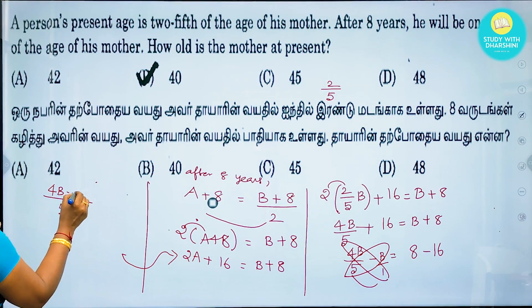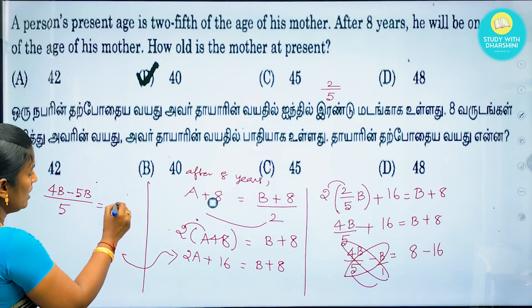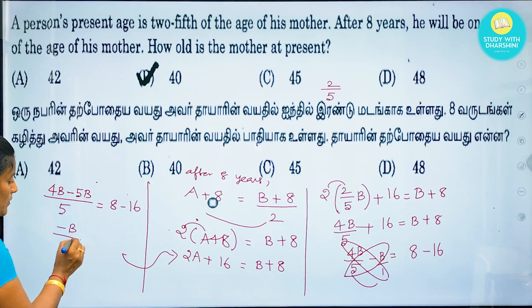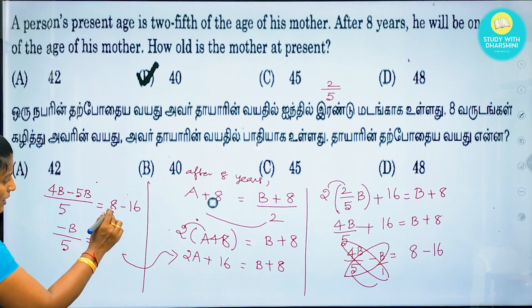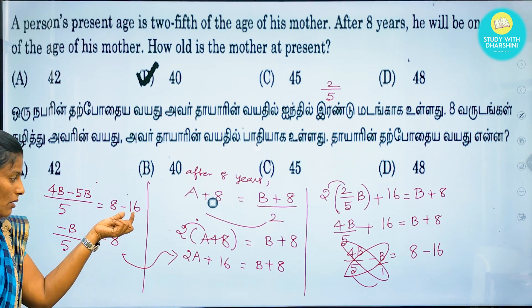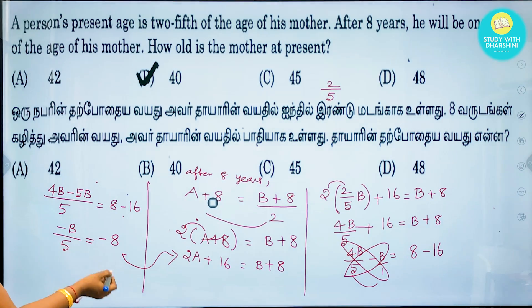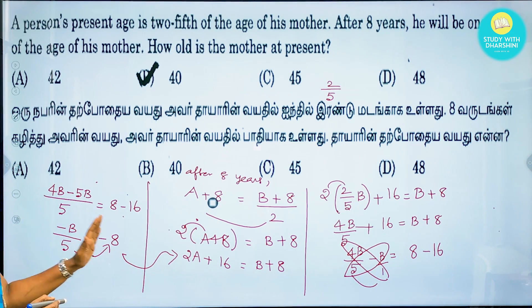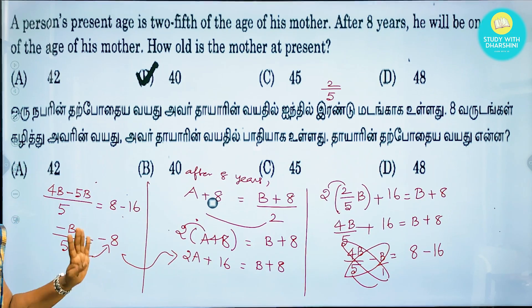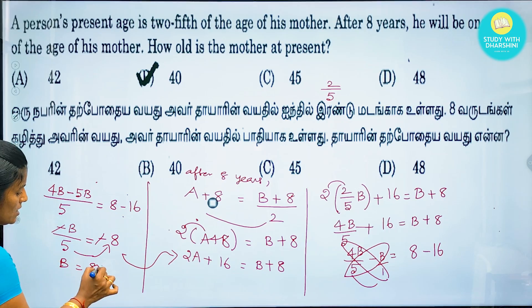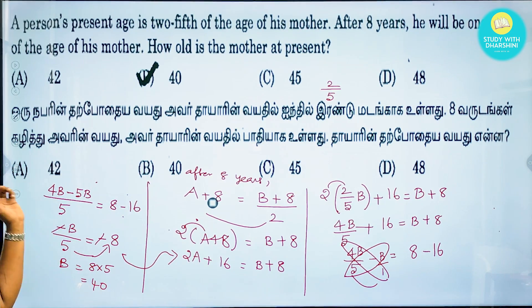So now 4b minus 5b on the left-hand side, and 8 minus 14 on the right-hand side. So 4 minus 5b is minus b. 1b divided by 5 equals 8 minus 16, which is minus 8. The two negatives are minus and minus, so we do multiplication: 8 into 5 gives the value of b. So b equals 40.